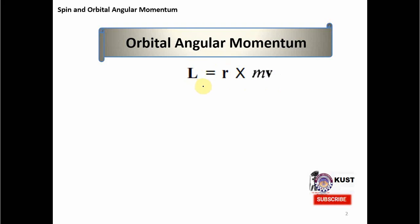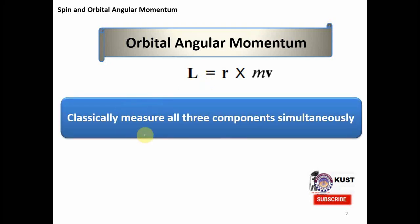If we measure the angular momentum, since it is a vector quantity, it will have three components: LX, LY, and LZ. Classically, all three of these components can be measured simultaneously and with 100% accuracy. There is no problem in having uncertainty among the components of the angular momentum.